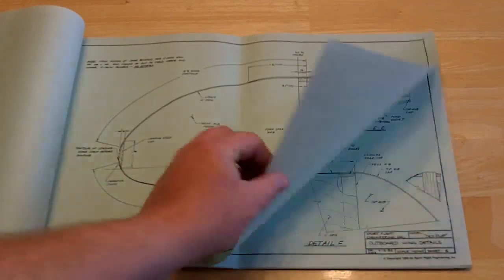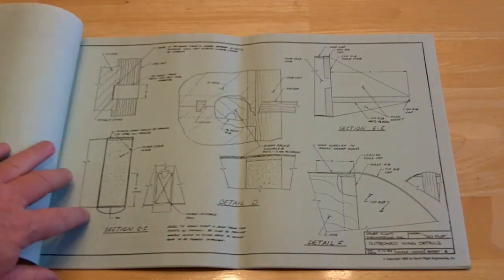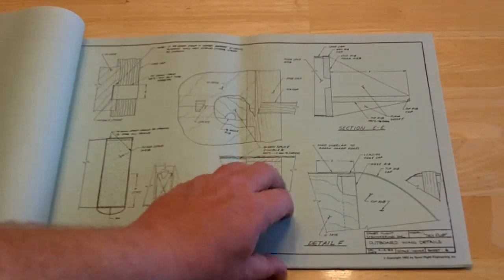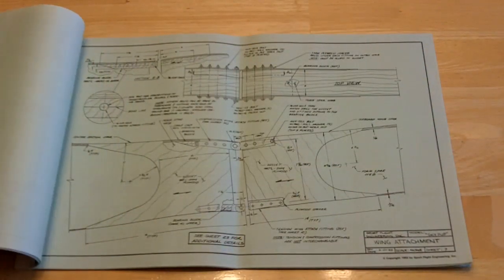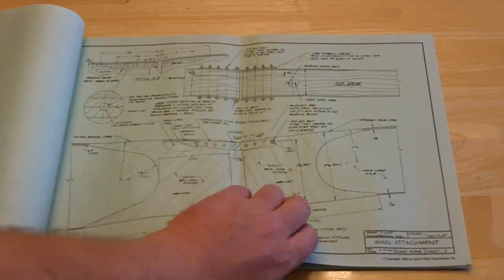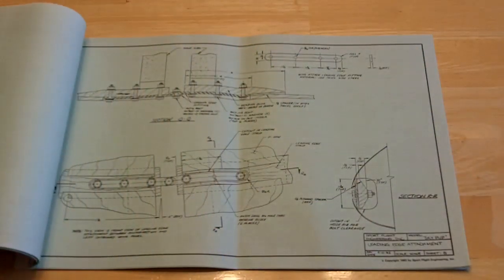There's some more of the wing detail. You can see here, this is outboard wings. Here's wing attachment. The Sky Pup is primarily built from foam and wood. Most materials are readily available, you can get them fairly easy.